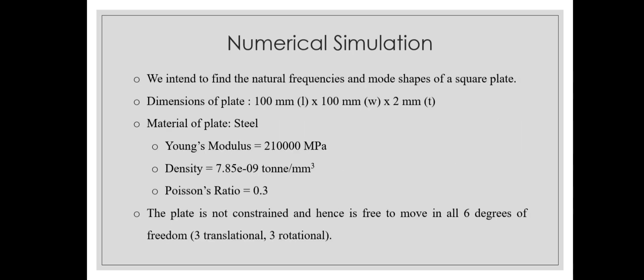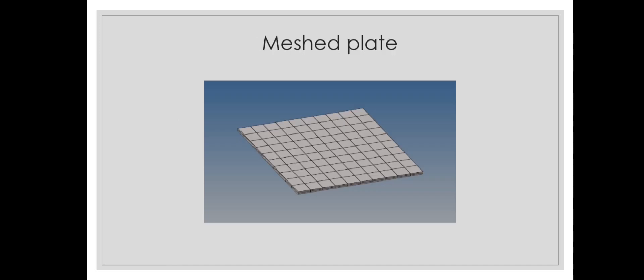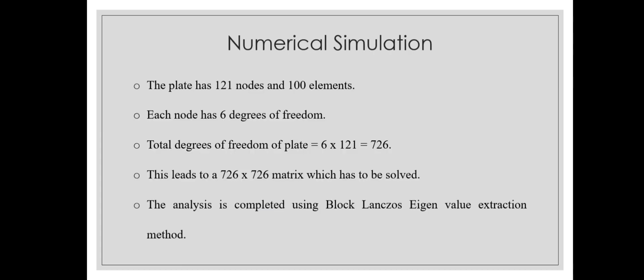Now let's do the numerical simulation. We intend to find the natural frequencies and mode shapes for a square plate — 100 mm in length by 100 mm in width by 2 mm thickness. The material is steel, with given Young's modulus, density, and Poisson's ratio. The plate is not constrained at all, so it's free to move in all six degrees of freedom: three translations along x, y, and z axes, and three rotations around x, y, and z axes. The meshed plate has 121 nodes and 100 elements. Each node has six degrees of freedom, giving a total of 726 degrees of freedom, leading to a 726 by 726 matrix solved by computer using the Block-Lanczos eigenvalue extraction method.